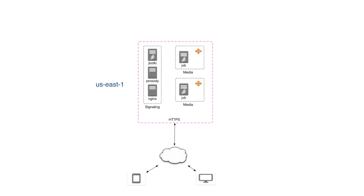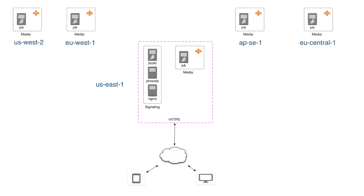Our usual architecture uses shards. This is an example of a single shard — it has one instance of Jicofo, our signaling server, and two instances of Jitsi Video Bridge, our media server. This set of three servers lives in, for example, the US East 1 region of Amazon, and this particular Jicofo instance can only choose between those two bridges. To allow cascading, we modified this so that bridges from all of our shards connect to all Jicofo instances, giving Jicofo access to a pool of Jitsi Video Bridge instances.